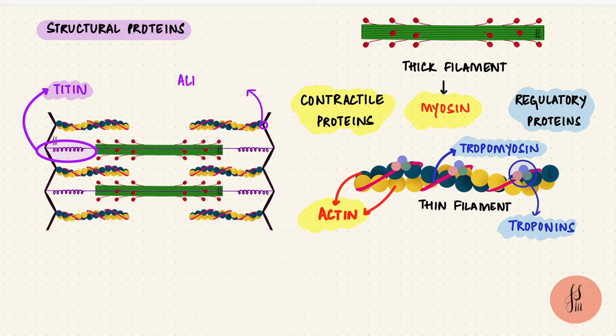There's alpha-actinin, which attaches the thin filaments to the Z-disc. And there are lots more like that: Nebulin, Desmin, etc. Overall, they help support the structure of the sarcomere.